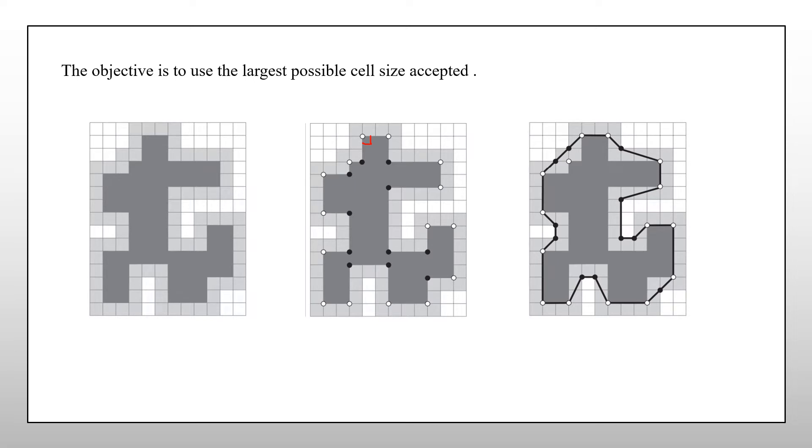And the concave vertices are the vertices whose interior angle is greater than 90 degrees. Here, the interior angle of this vertex is greater than 90 degrees. And hence, it is a concave vertex.